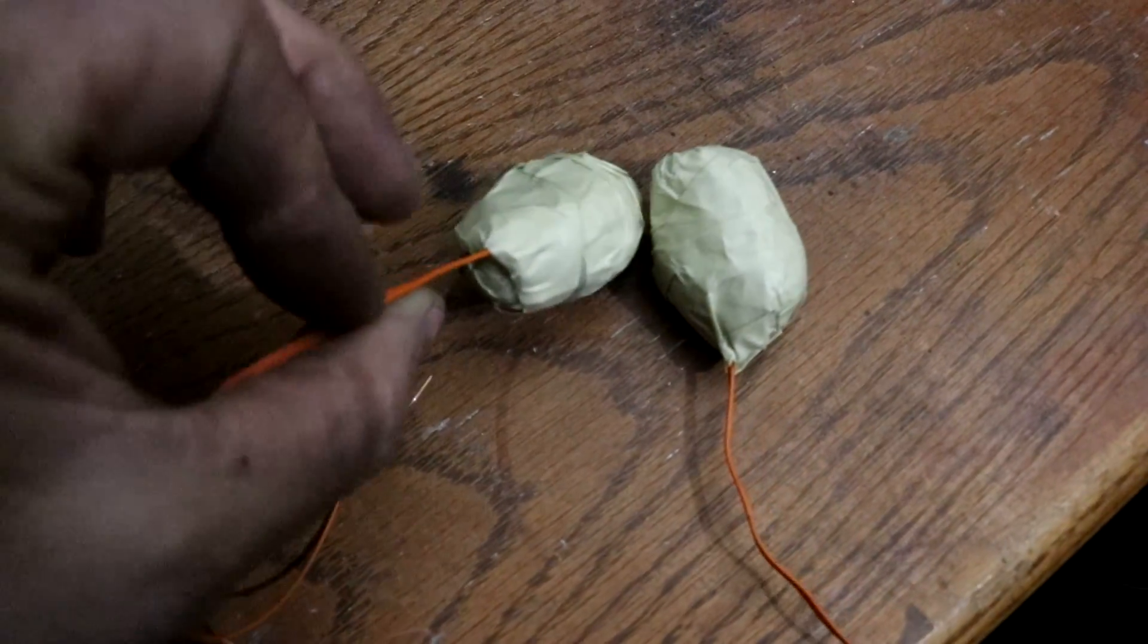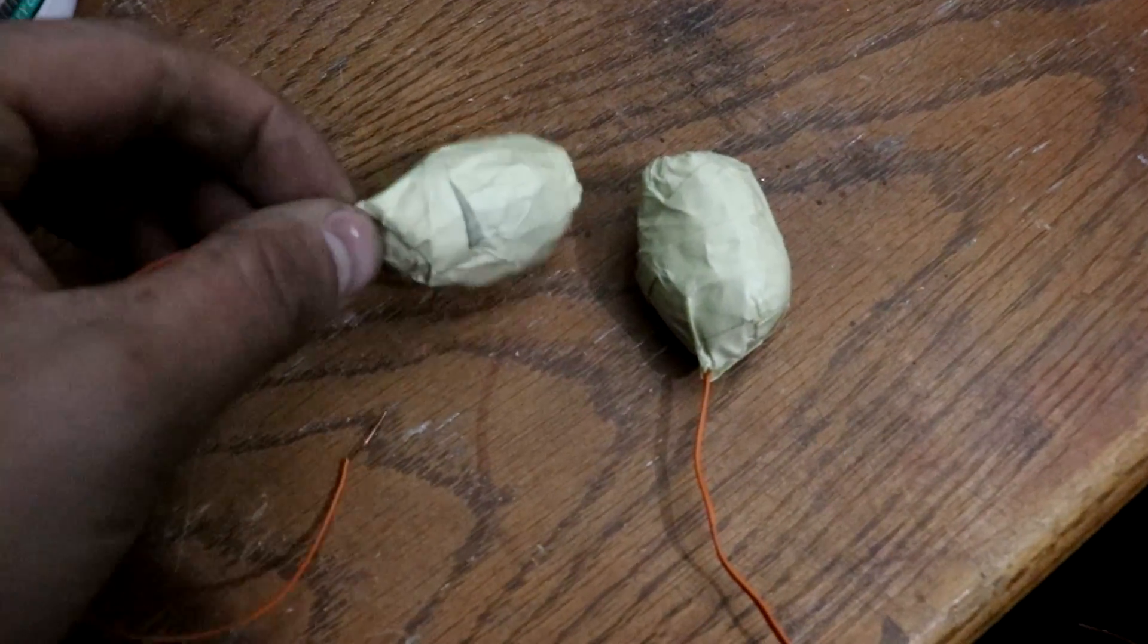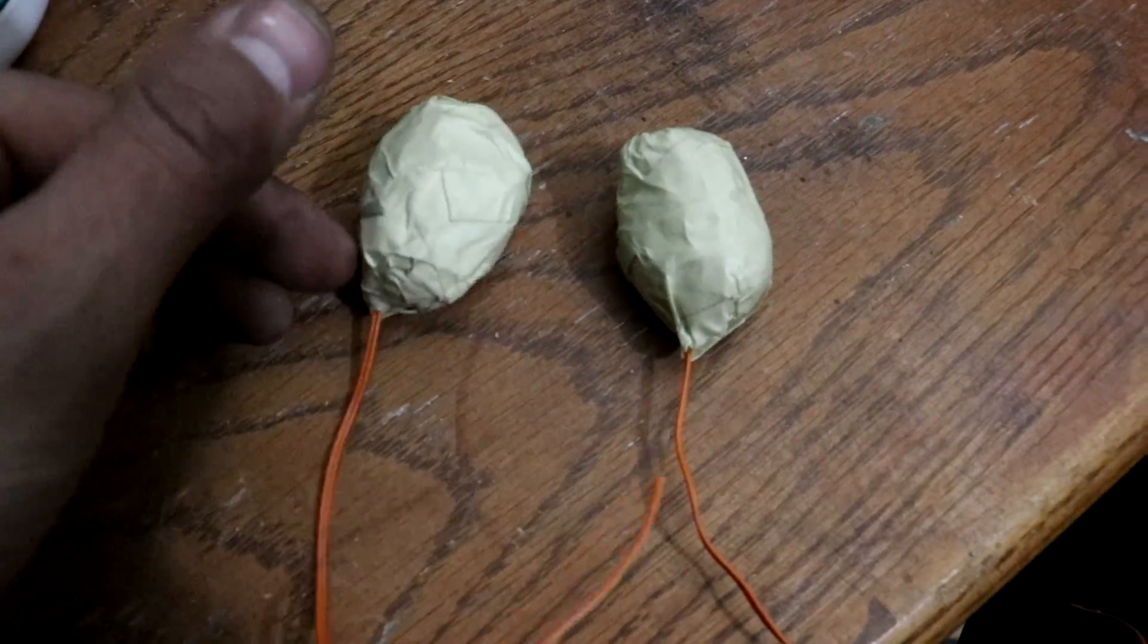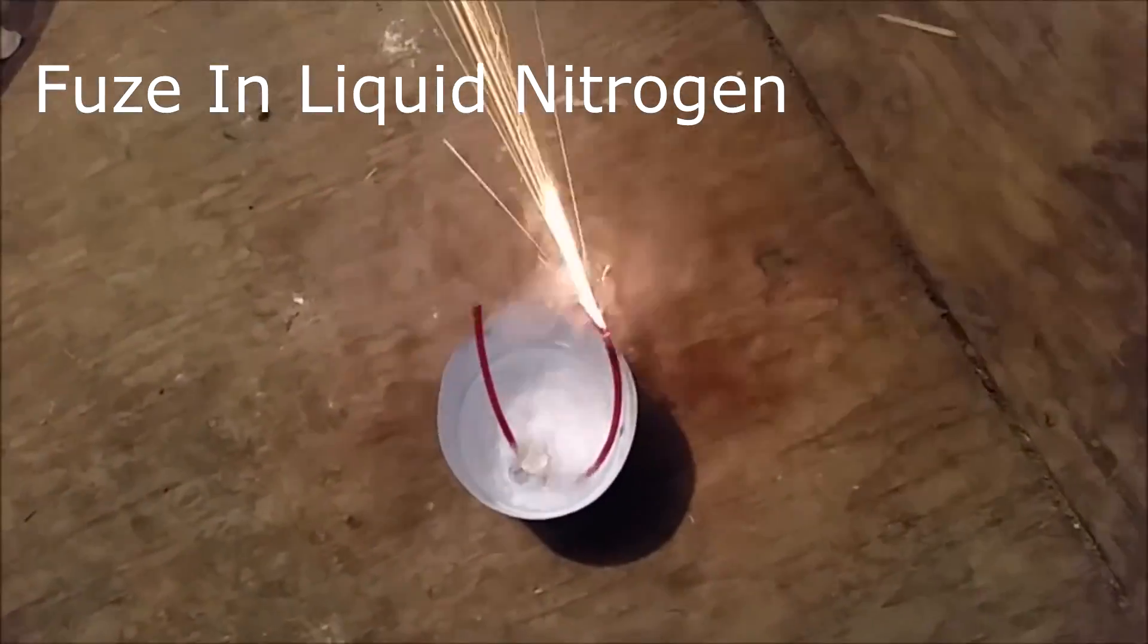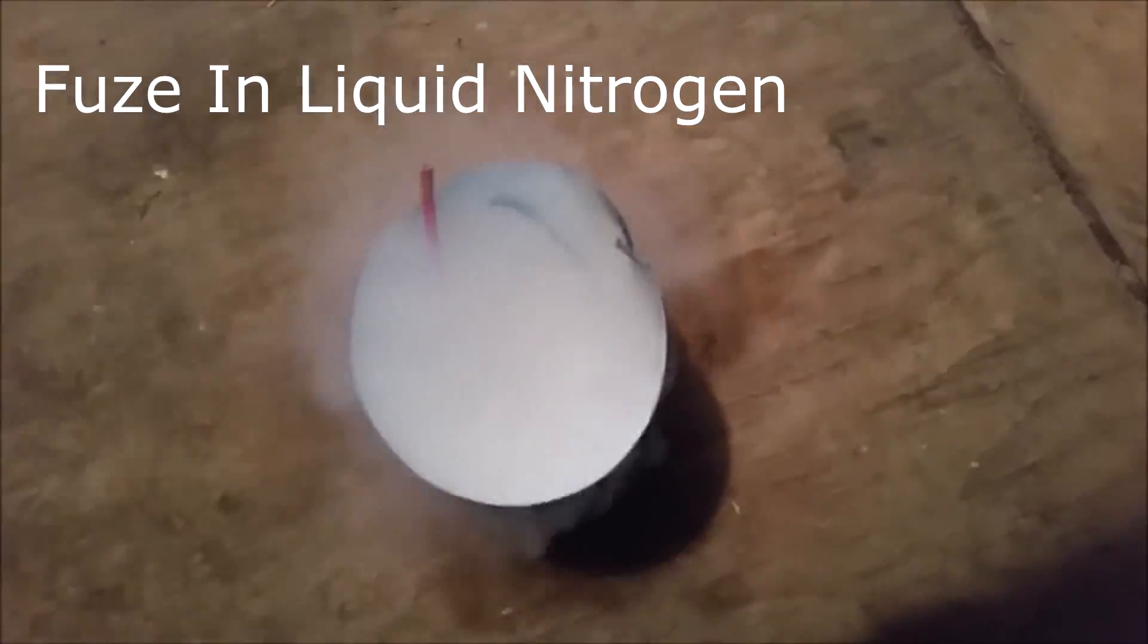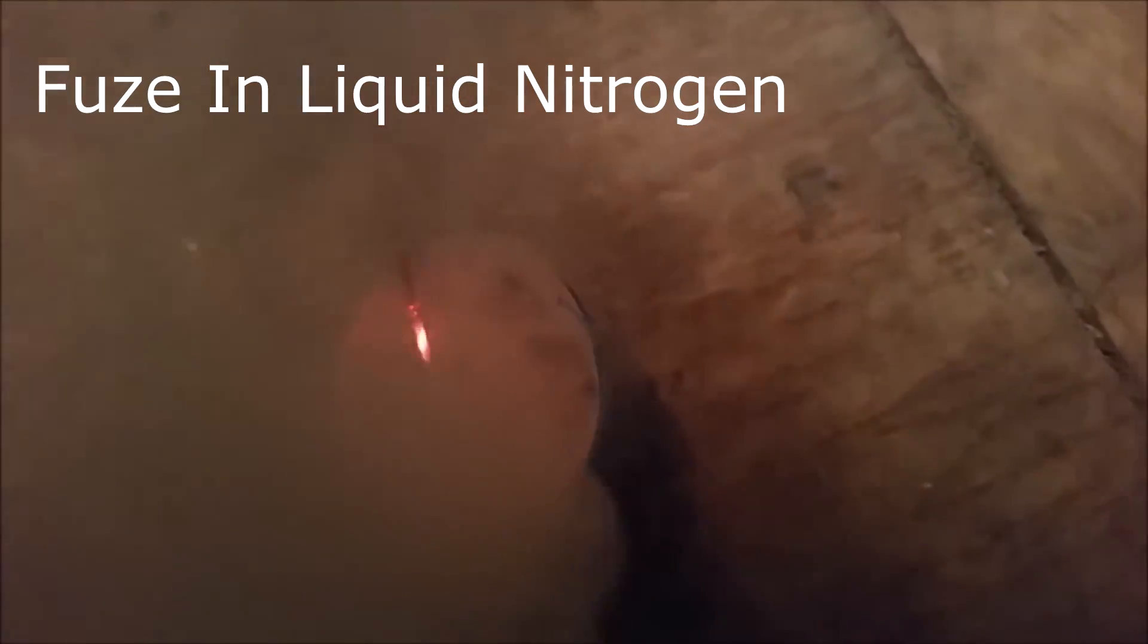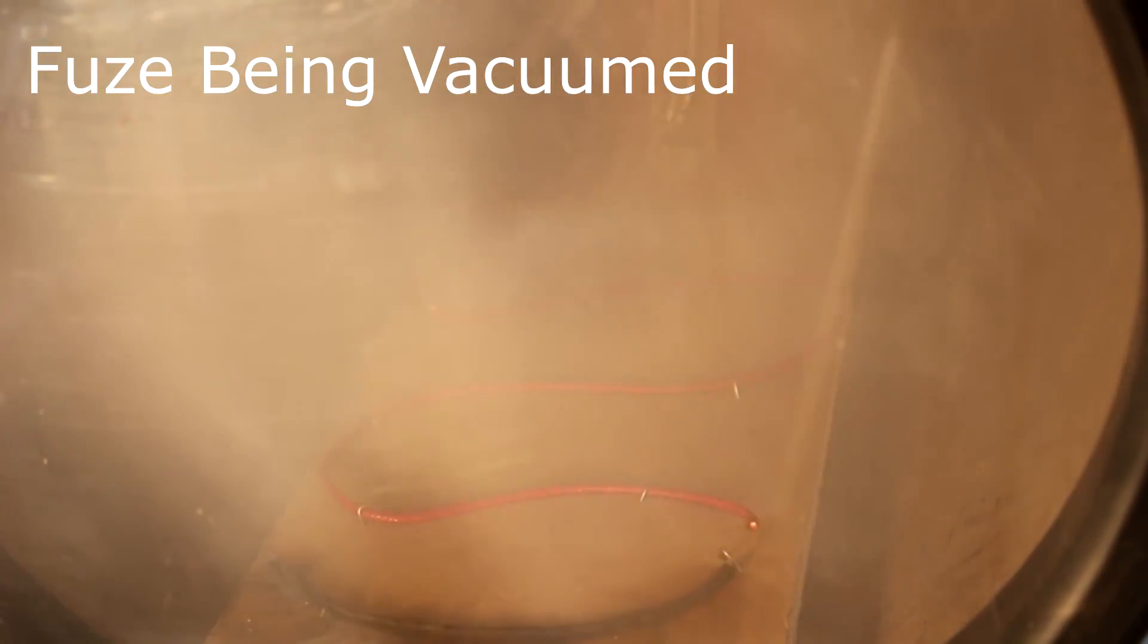Besides being smaller, there's one more difference. These are electrically ignited. Normally they would use a black powder fuse, but black powder fuses do not burn in a vacuum. You can get a fuse to burn underwater, through liquid nitrogen, but not in a vacuum chamber because black powder cannot burn if there's no pressure.